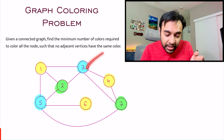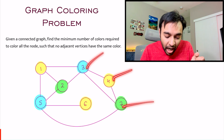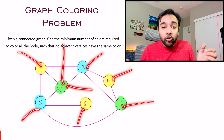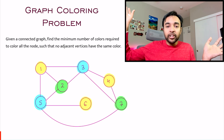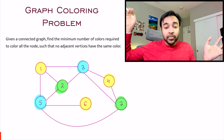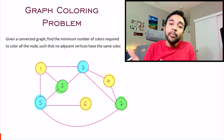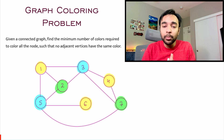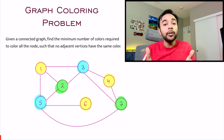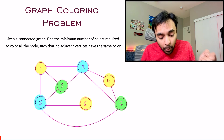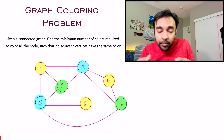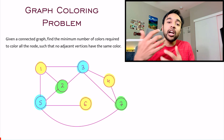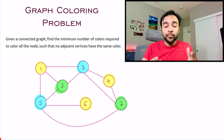But what happens when your graph starts to expand? What if you have 1000 nodes? You possibly cannot even begin to find out all the different combinations. So definitely we need some kind of an algorithm to start approaching it.